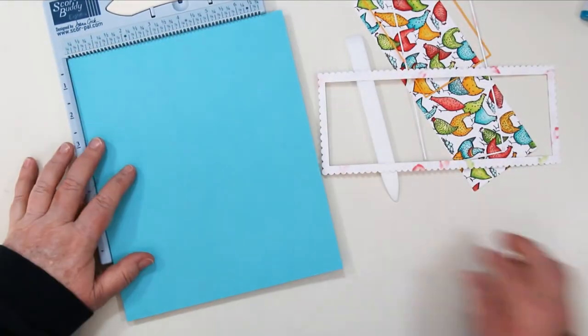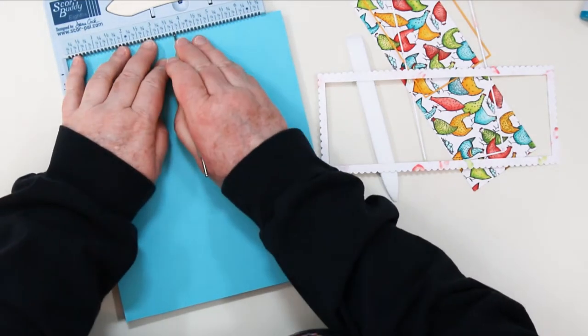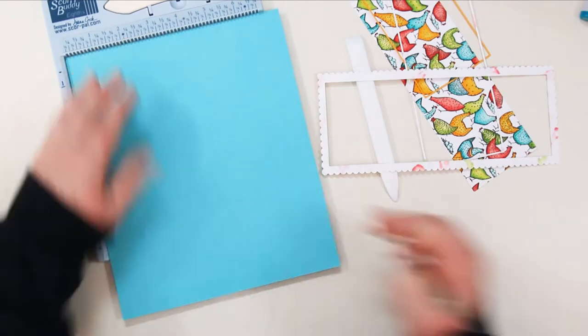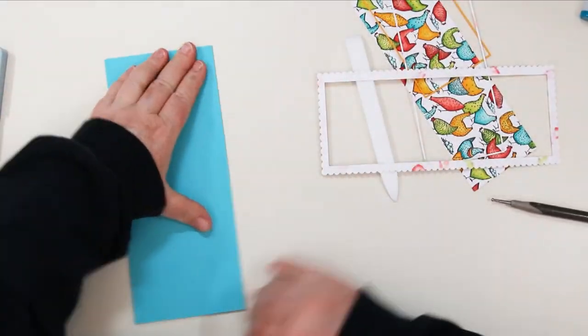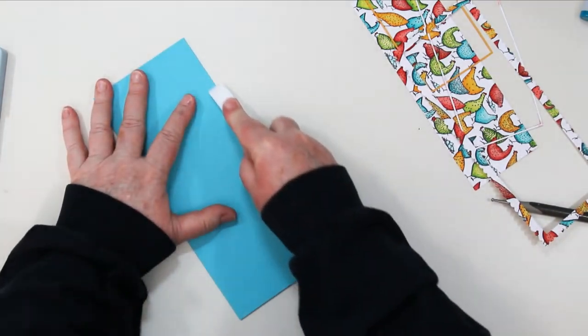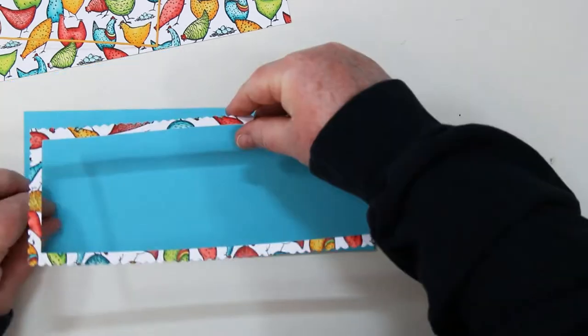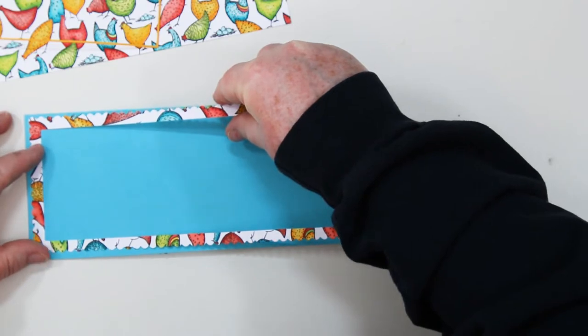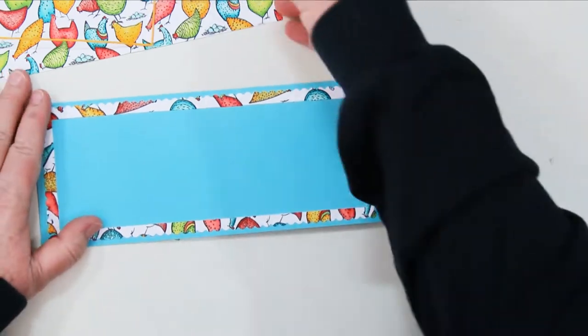So we're going to do a card base and I have decided that this one seven and a half by nine. So I'm going to score and fold it at three and three quarters and then burnish it really well to get it good and flat before I start attaching all my pieces. So I'm going to start with the outside piece first and I'm using liquid glue on purpose because it gives me a little bit of fudge room if I don't get it on there quite square. And as you can see I don't so I'm able to move it around to get it square.